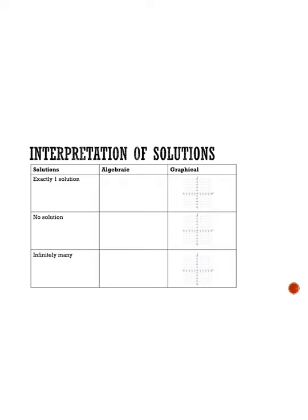Before we do more examples, let's talk about the interpretation of your solutions — both the algebraic approach and the graphical approach. If we have exactly one solution, then algebraically, when you've worked through it, you're going to get something like x equals a number and y equals a number — and that number could be 0. Graphically, if we graphed two equations, we would see them intersect at exactly one point, and that point would be our solution. Algebraically we get actual answers; graphically they intersect at exactly one point.